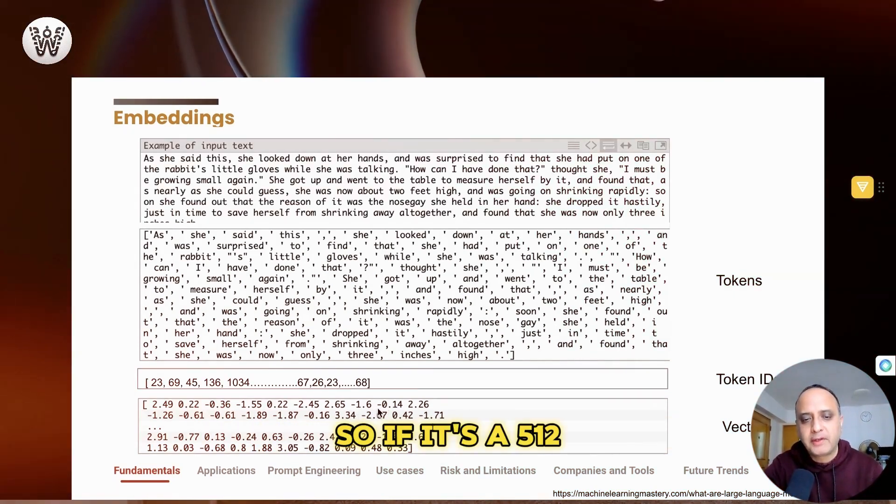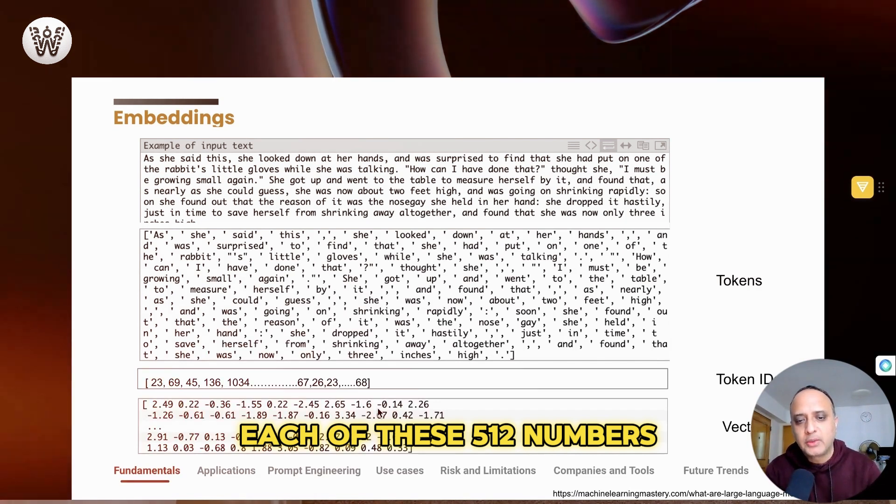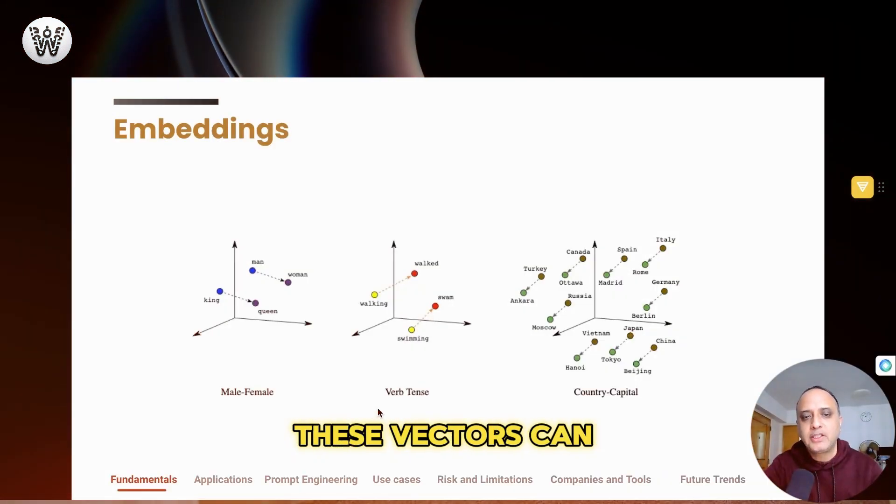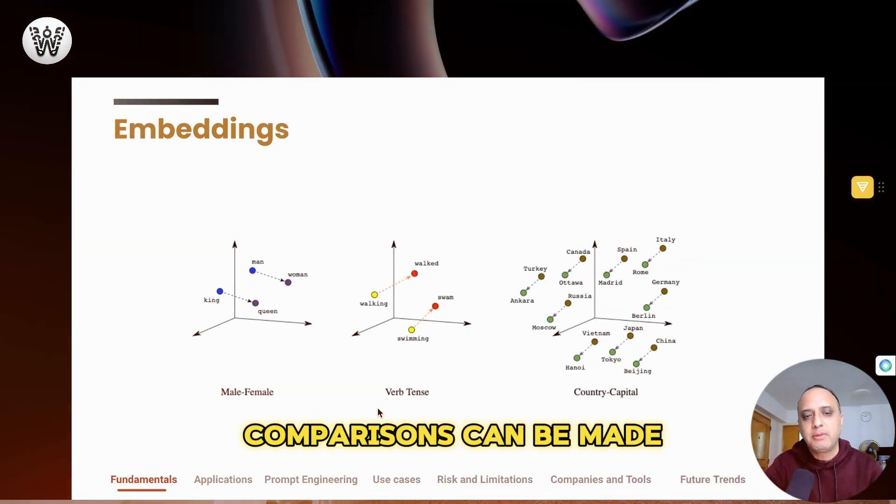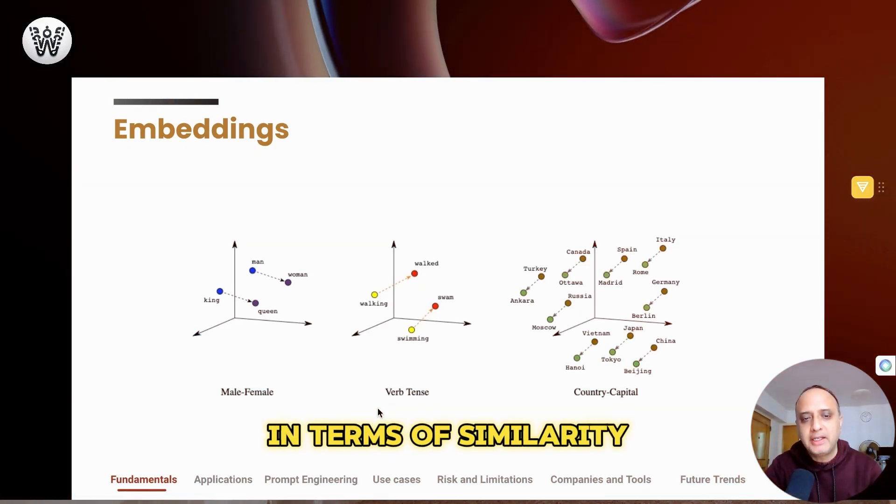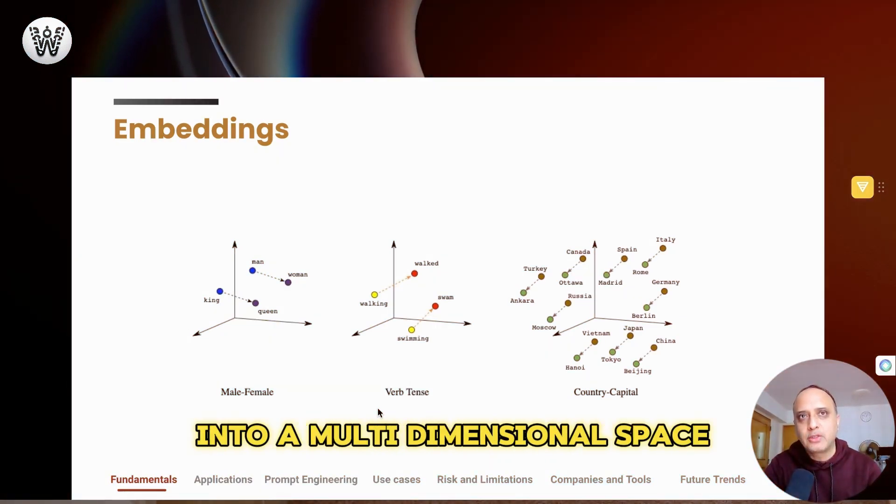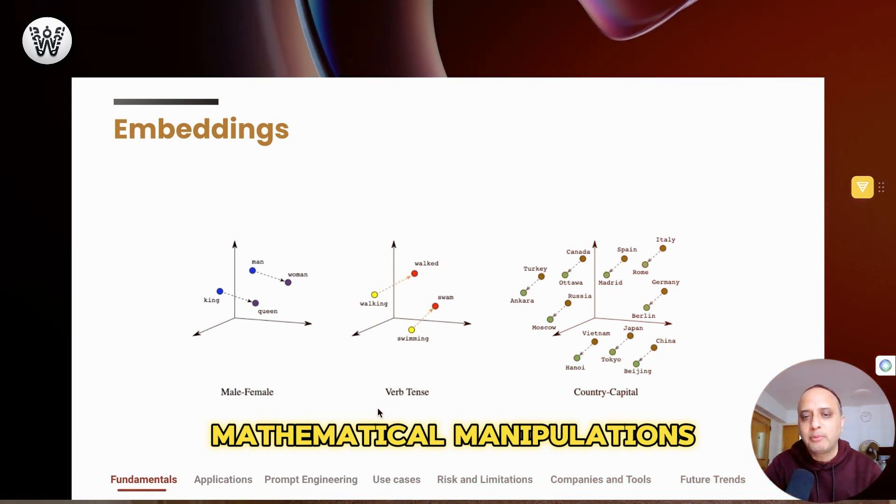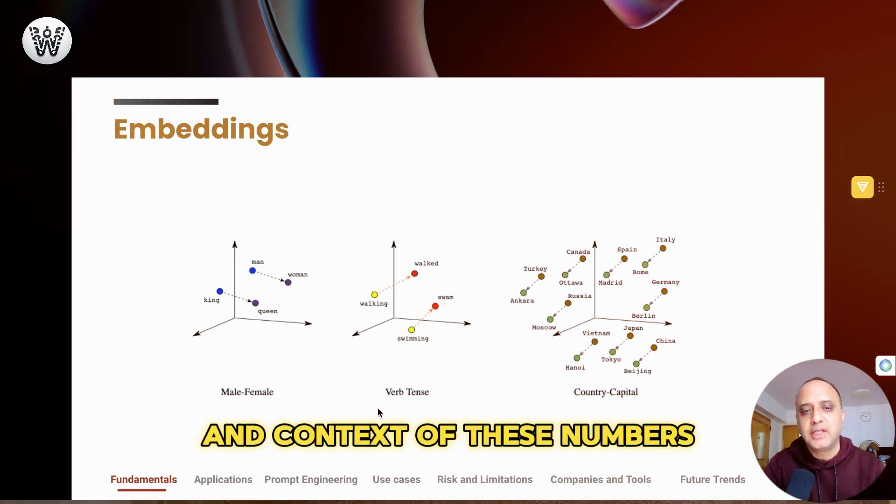So if it's a 512 list which captures the meaning of a word, each of these 512 numbers capture some characteristic or attribute of the word. And that also means that these vectors can then be manipulated and interesting comparisons can be made in terms of similarity, in terms of adding these vectors, subtracting these vectors, because once you project them into a multi-dimensional space, they exhibit some remarkable mathematical manipulations through which you can derive the meaning and context of these numbers or vectors.